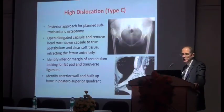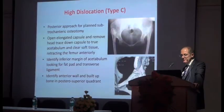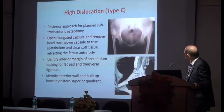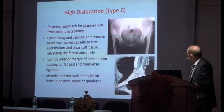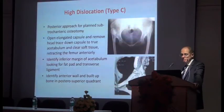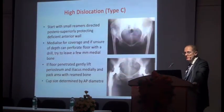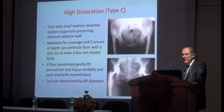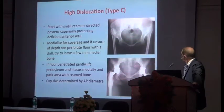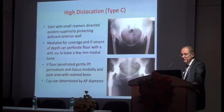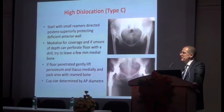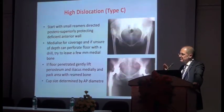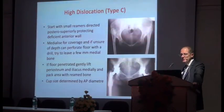The capsule will be stretched all the way up. Gradually work your way down, clear the soft tissues, retract the femur anteriorly, and try to identify the inferior margin of the acetabulum — looking for the fat pad and the transverse ligament. Identify the anterior wall and protect it, directing your reaming deep into the posterior bone where your cup will be pushed back into good solid bone. Start with small reamers directed at posterior stability, protecting the deficient anterior wall. Medialise for coverage. If unsure of depth, perforate the floor with a drill bit and use a depth gauge. Try to leave a few millimetres of medial bone. If the floor is penetrated, gently strip the periosteum off the back of the pelvis with a curette and pack morselised bone to build up the floor.